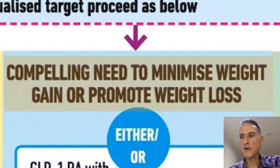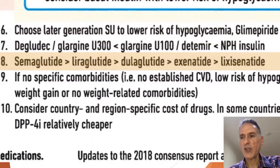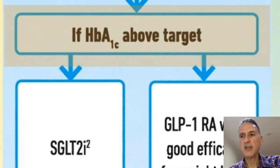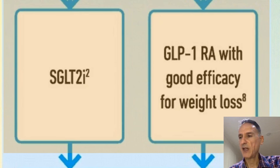If the focus is on weight — minimising weight gain or promoting weight loss — we will give either a GLP-1 receptor agonist or an SGLT2 inhibitor. Among GLP-1 receptor agonists, the best efficacy for weight loss is semaglutide, followed by liraglutide, then albiglutide, exenatide, and lixisenatide. If HbA1c remains above target, we then give the opposite agent: if the patient had a GLP-1 receptor agonist, we add an SGLT2 inhibitor, and vice versa.